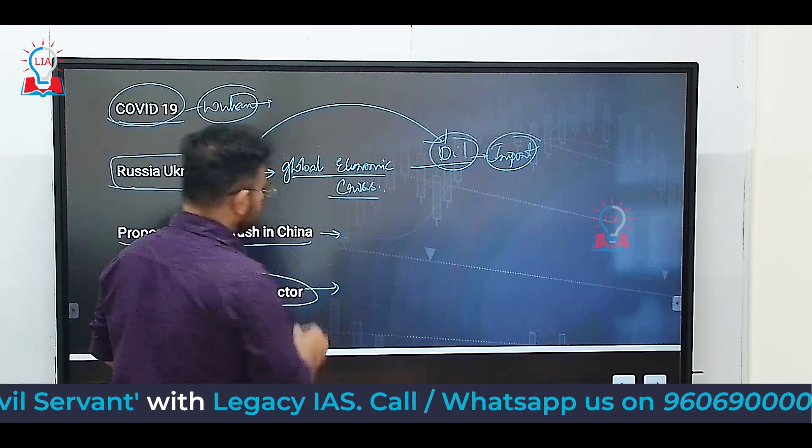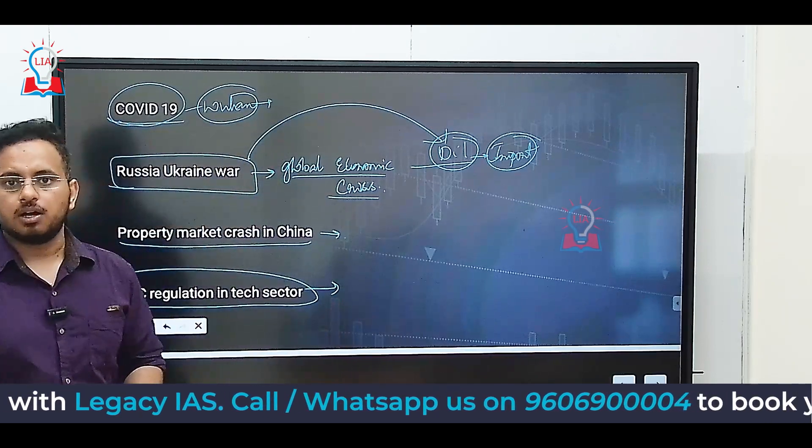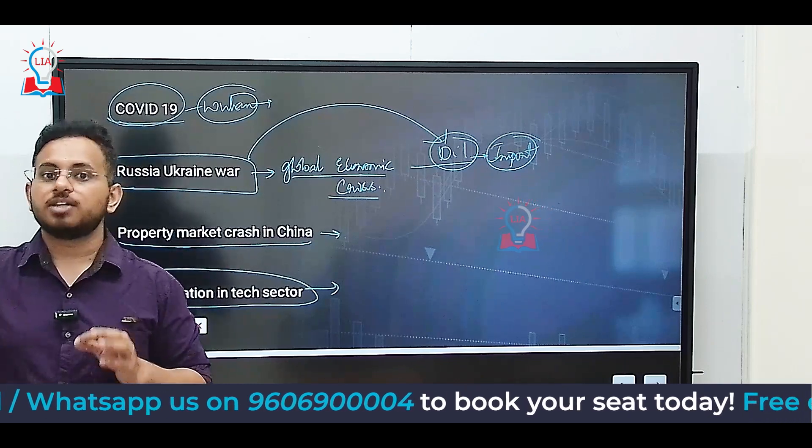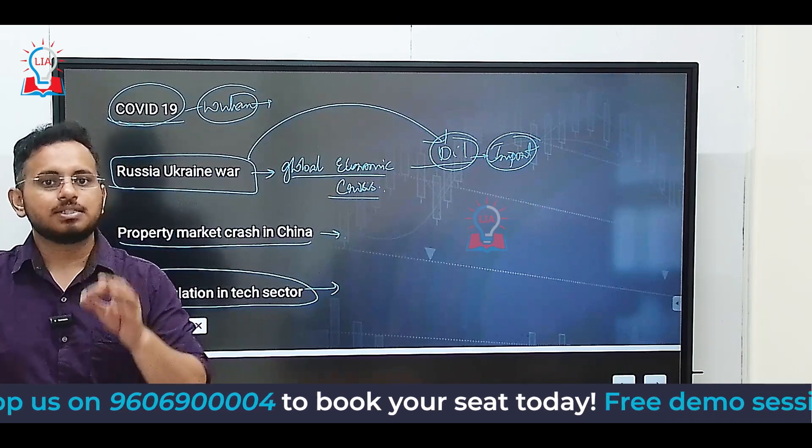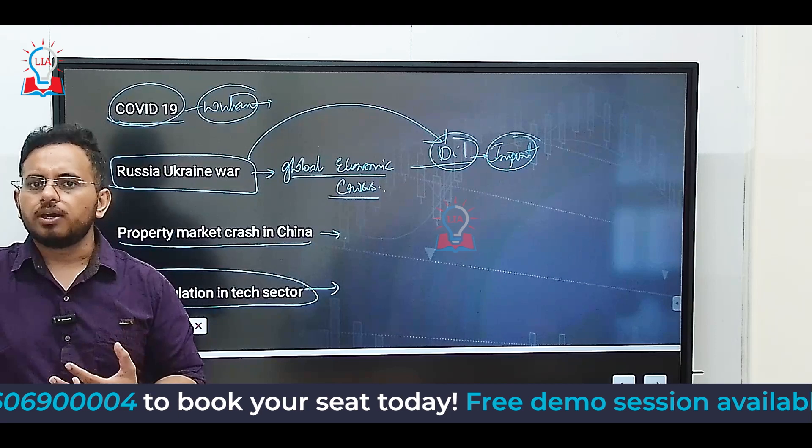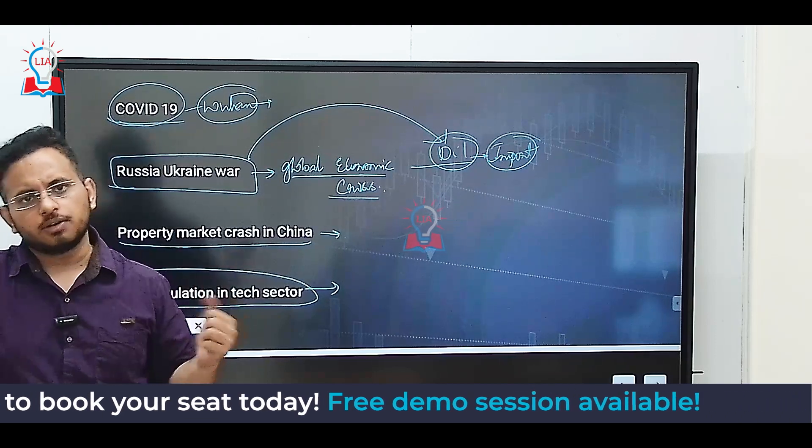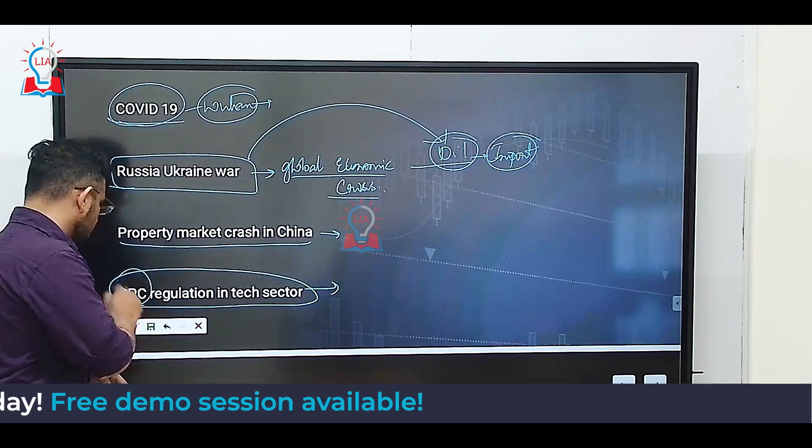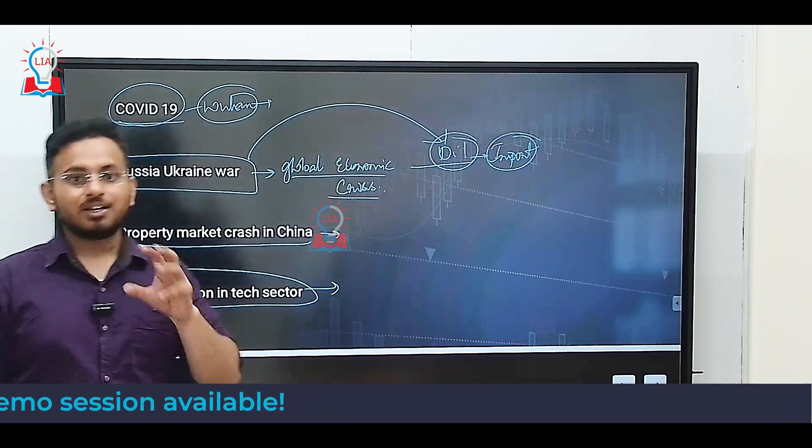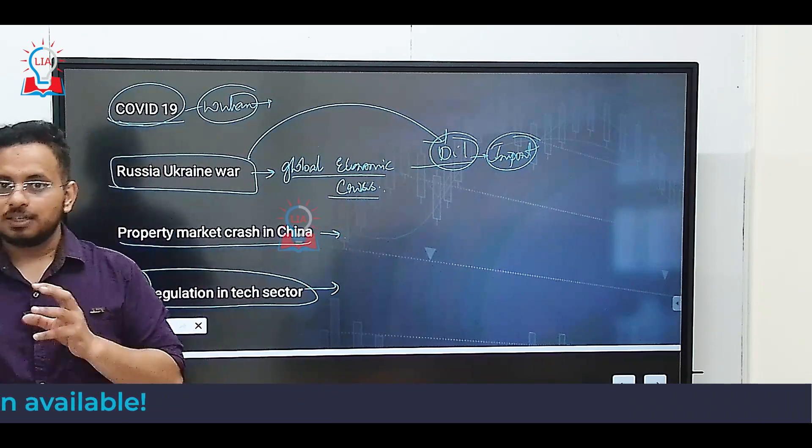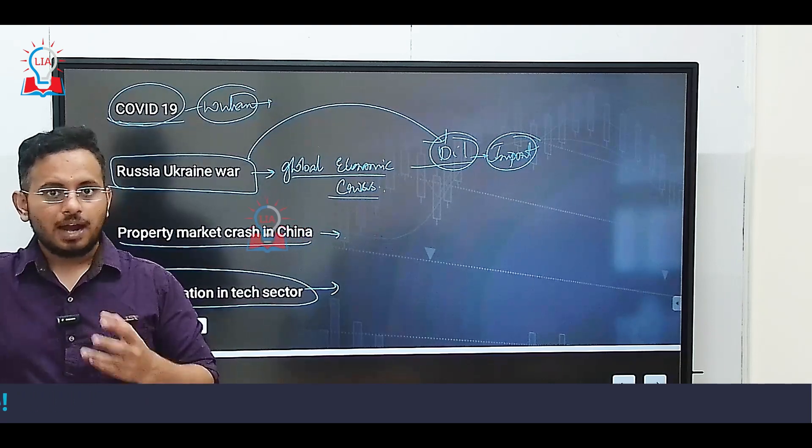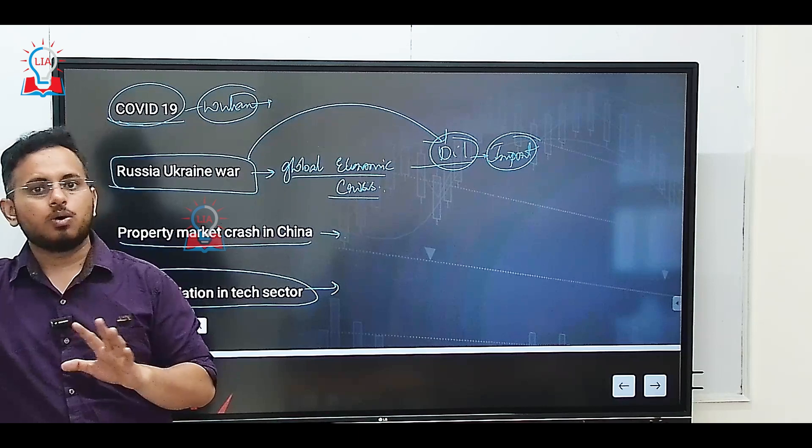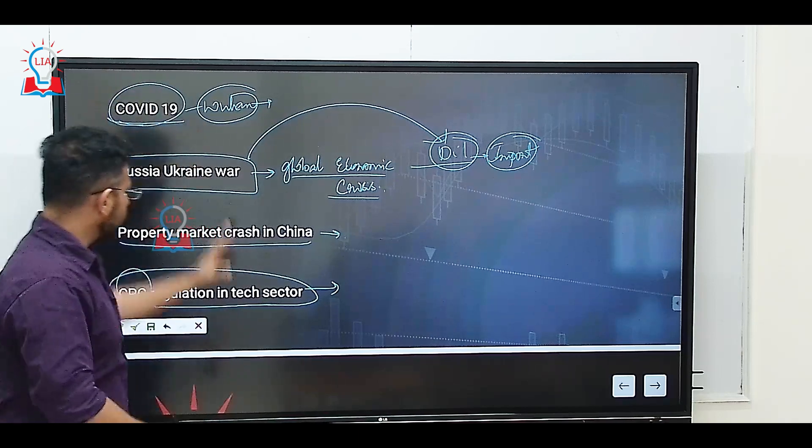Finally, the Chinese Communist Party or the Communist Party of China had a very big crackdown on the technology giants. The technological giants of China were growing more powerful than the Chinese government. So the Chinese Communist Party, the CPC, Communist Party of China, regulated the tech sector. Because of this, the tech productivity reduced and there was a lot of unemployment and the technological growth faced a slowdown.